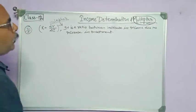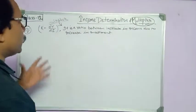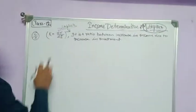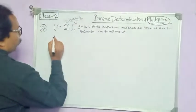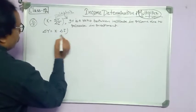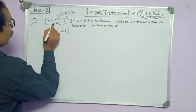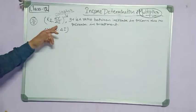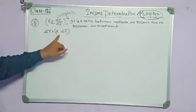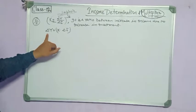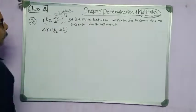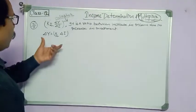The multiplier is the ratio between increase in income due to increase in investment. Delta Y is equal to K into delta I — this comes from cross multiplication. So the multiplier tells us how many times the income will be generated due to a change in investment.